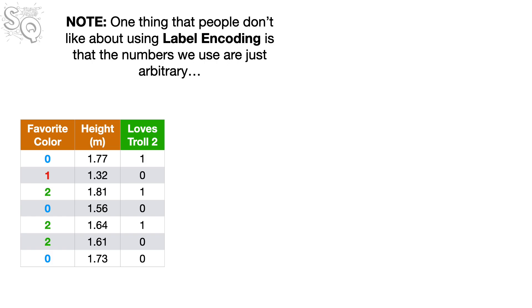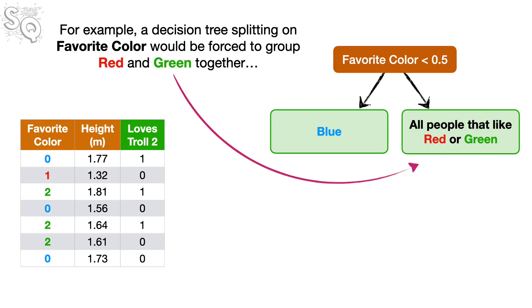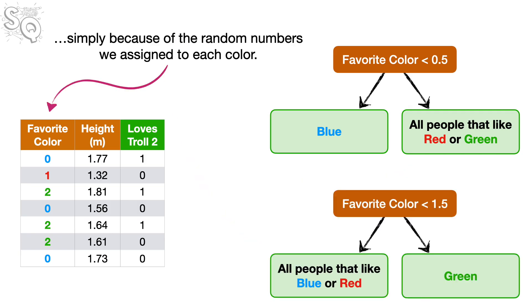Note, one thing that people don't like about using label encoding is that the numbers we use are just arbitrary. And some machine learning algorithms will treat the order of the numbers as if they might mean something, and that can cause problems. For example, a decision tree splitting on Favorite Color would be forced to group Red and Green together, or Blue and Red together, simply because of the random numbers we assign to each color.